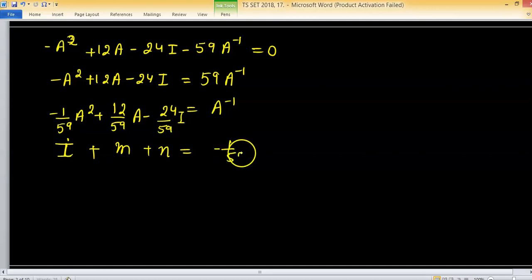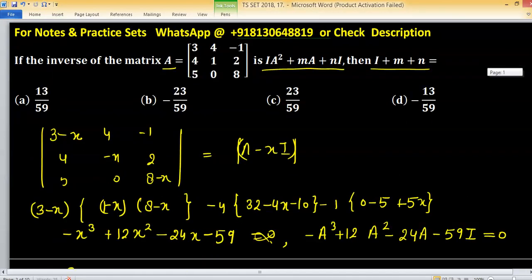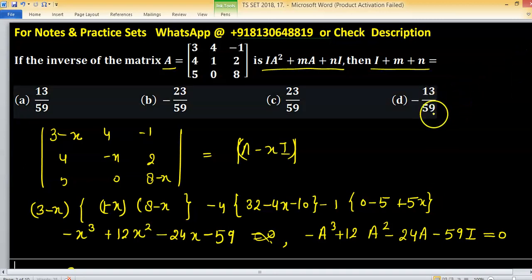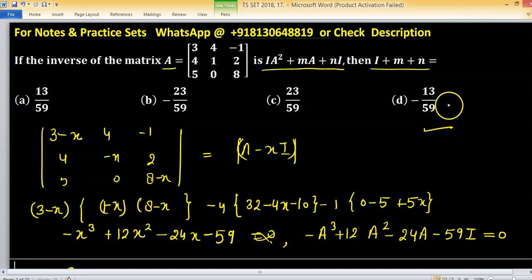So minus 1 upon 59 plus 12 upon 59 minus 24 upon 59. After simplifying this, we have minus 13 upon 59. So which option is giving this, minus 13 upon 59, option D will be correct.